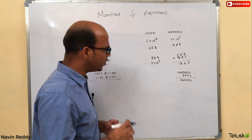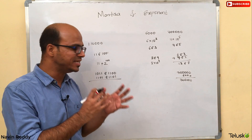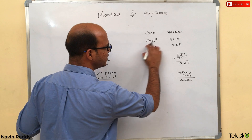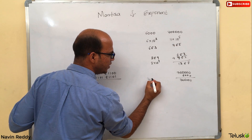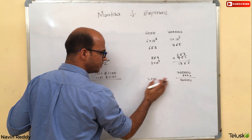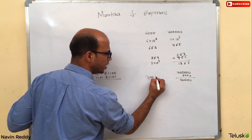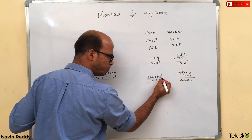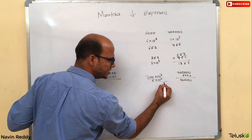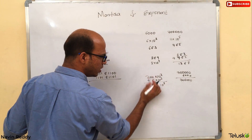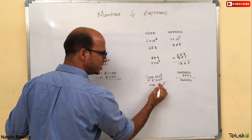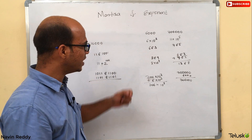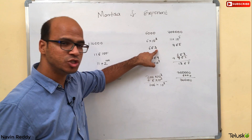So whenever you want to add numbers that have Mantissa and Exponent, you have to make sure the exponents are the same. You can only add them when both exponents match. You can change 7 into 10 raised to 5 into 700 into 10 raised to 3, so both become 10 raised to 3. The exponents must be made equal before adding.